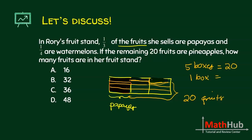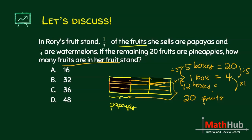One box is 20 divided by 5, which equals 4 fruits per box. In the diagram, you have three times four, or twelve boxes total. One box has 4 fruits, so twelve boxes have 4 times 12 equals 48 fruits. The answer is letter D.